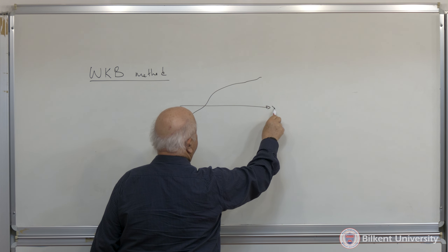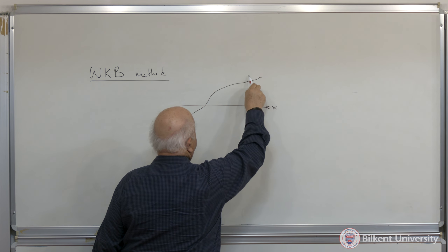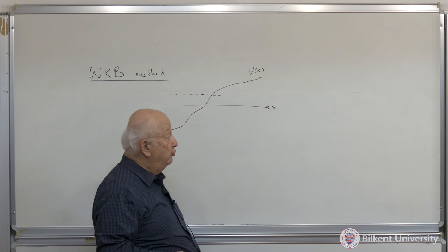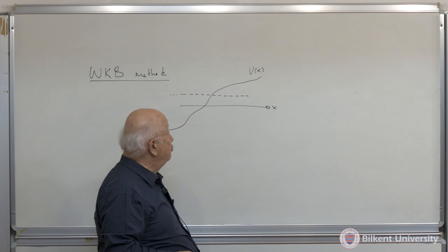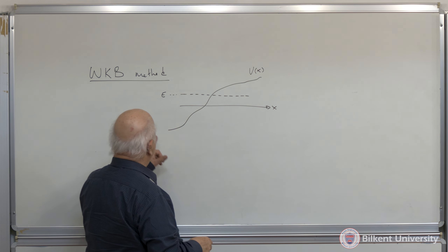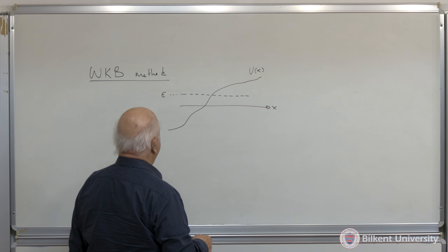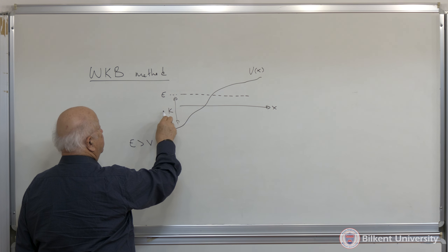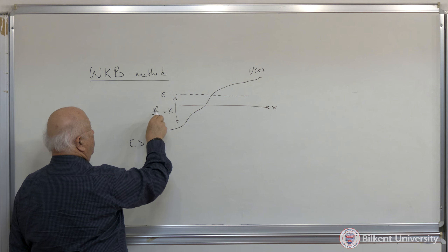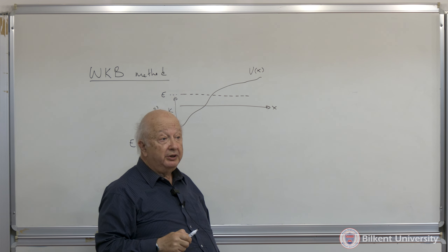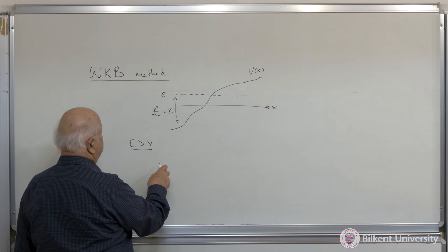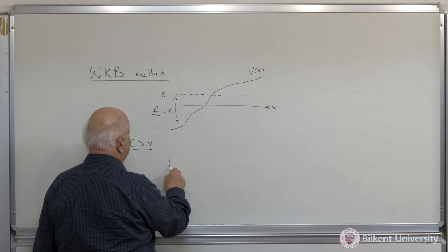The WKB method, or WKB approximation. We looked at the problem of a slowly changing potential. So if I have some potential in some region of space, with the x-axis and V of x, we are looking at the possible value of a solution at a certain energy level E. Last time we mainly looked at the case when E was greater than V, so that we have some amount of kinetic energy, equal to P squared over 2m.